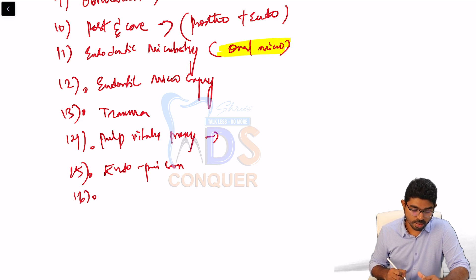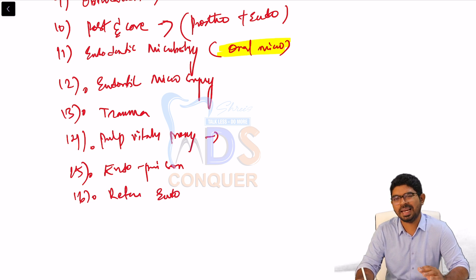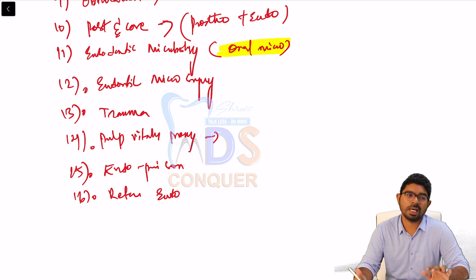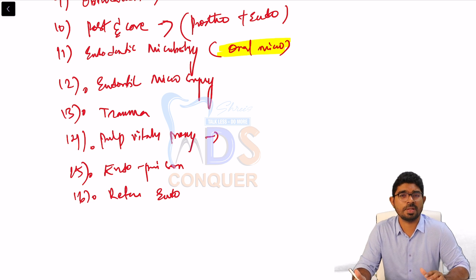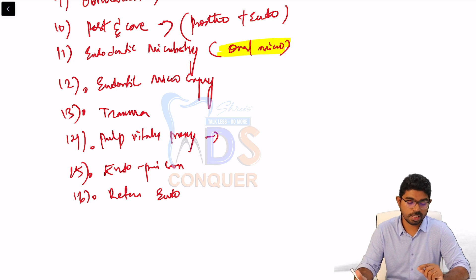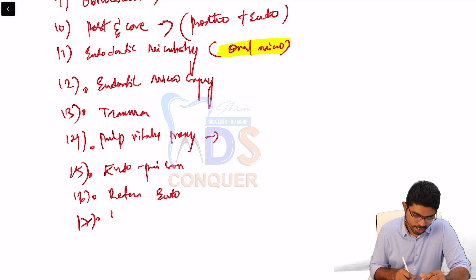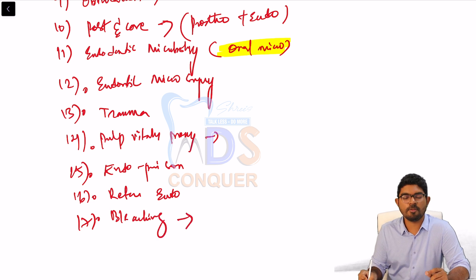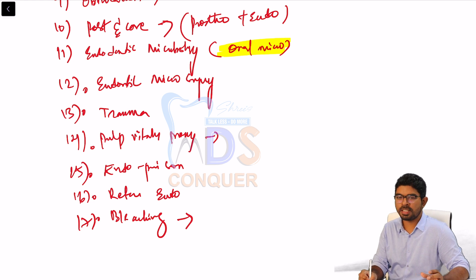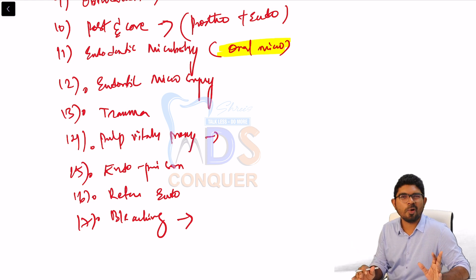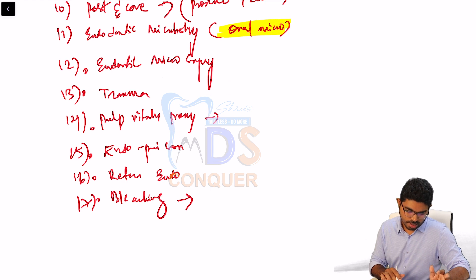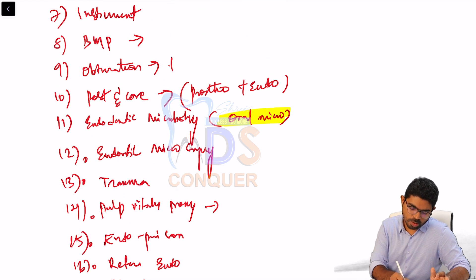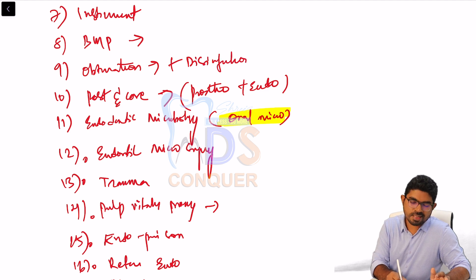Regenerative endodontics is a topic that is often neglected — not in MCQ books or standard texts — but AIIMS frequently asks questions on it, so do not neglect it. Also add a note about bleaching: different types of bleaching procedures — non-vital bleaching, vital bleaching — materials commonly used, and the technical knowledge of how bleaching is performed.